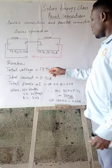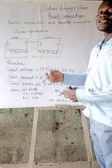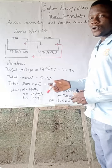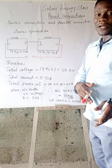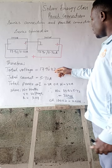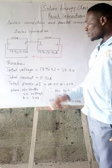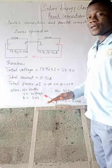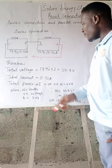When you run a series connection, you increase the voltage. When you run a parallel connection, you increase the amperage. But we are dealing with series connection right now, so the total voltage here is added — 35.8 volts. For the current, the current remains the same when you run a series connection.